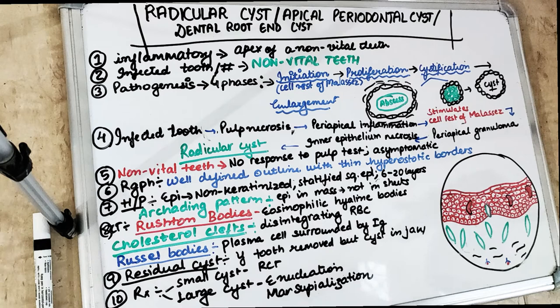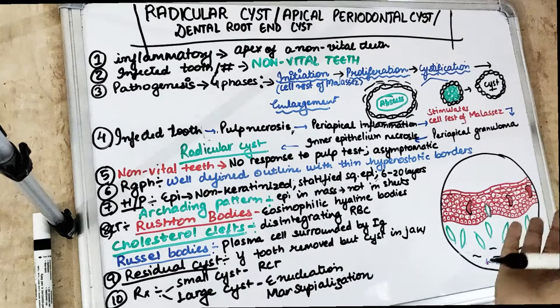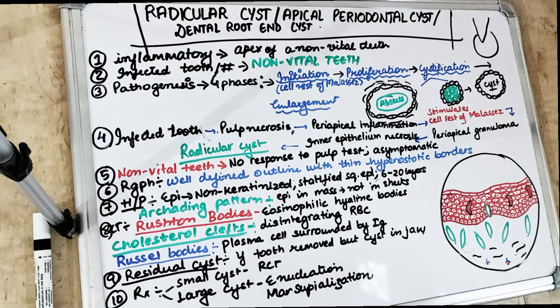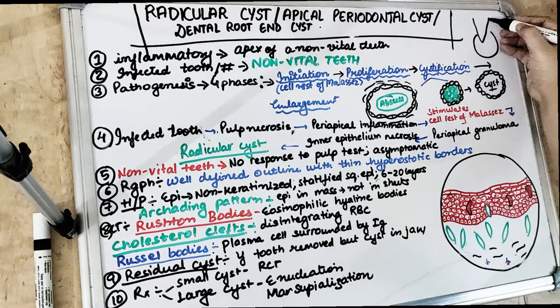The radicular cyst is also known as the apical periodontal cyst and also as the dental root end cyst. As the name suggests, the first point is taken from the name: 'apical' means it is going to be present at the root apices, and 'periodontal cyst' means it is going to involve the PDL.